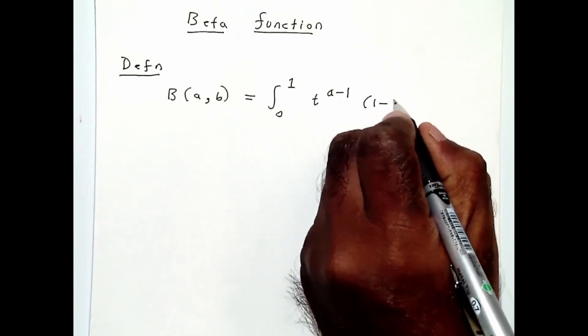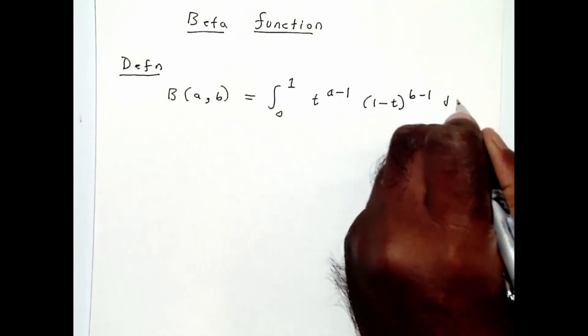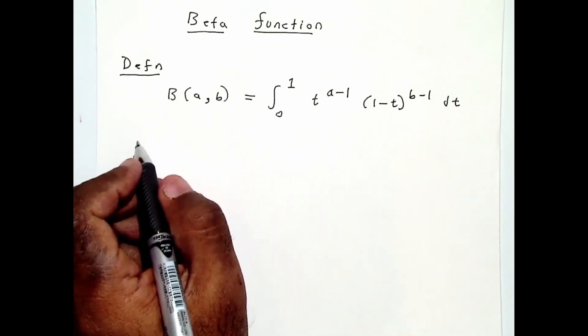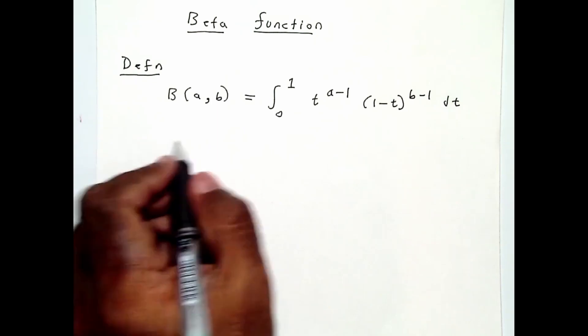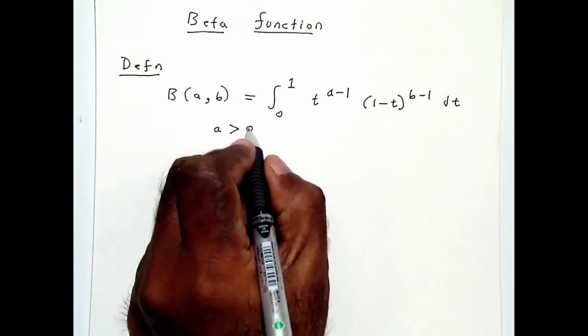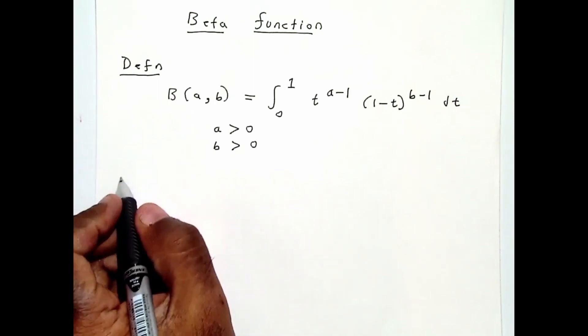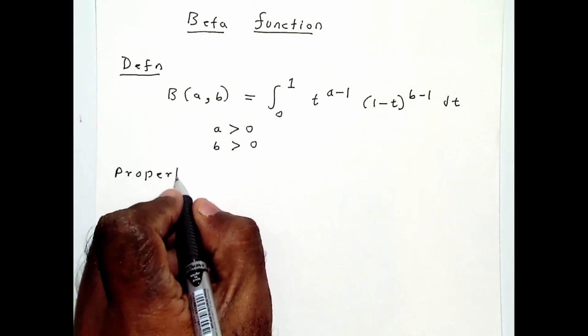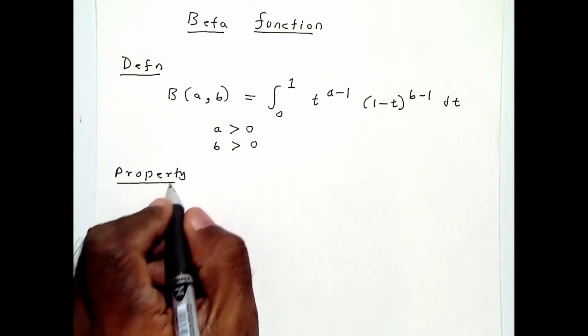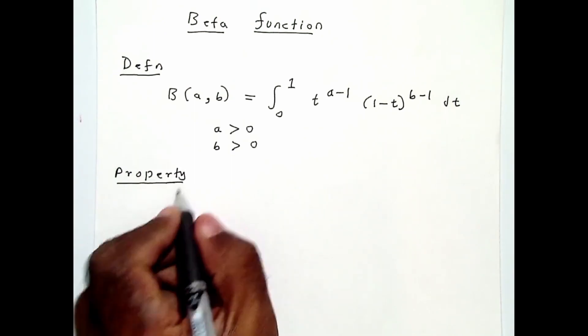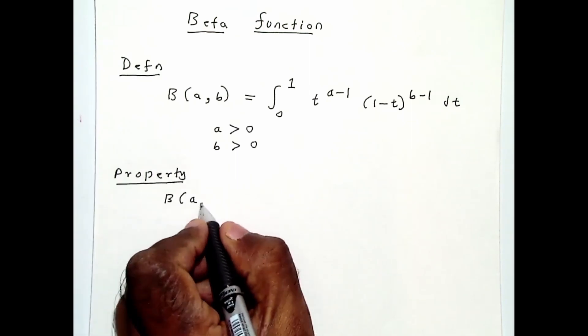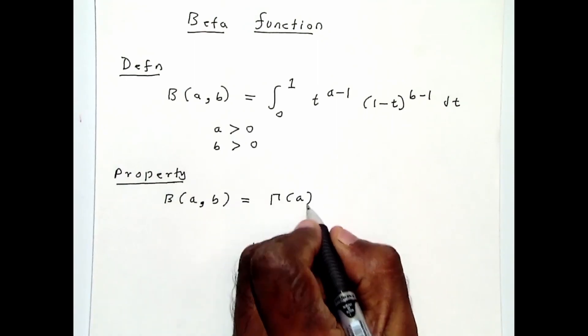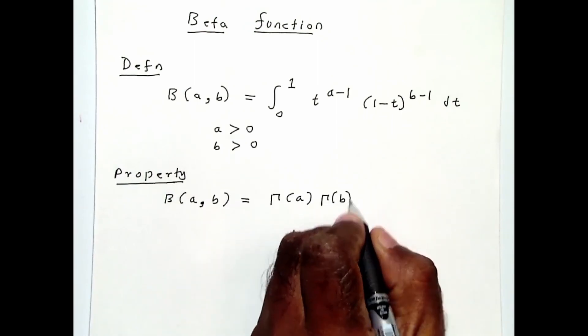Usually a must be positive and b must be positive. One property of the beta function is that it is related to the gamma function, which I talked about in a separate video, as follows.